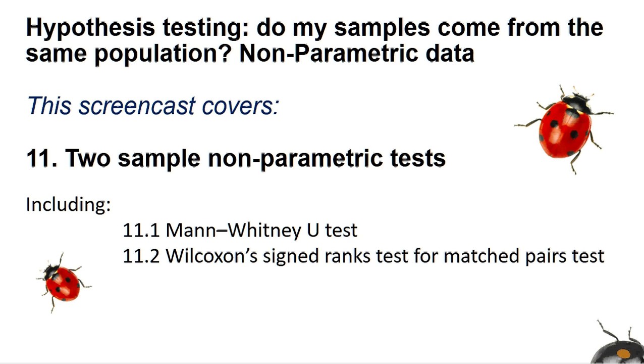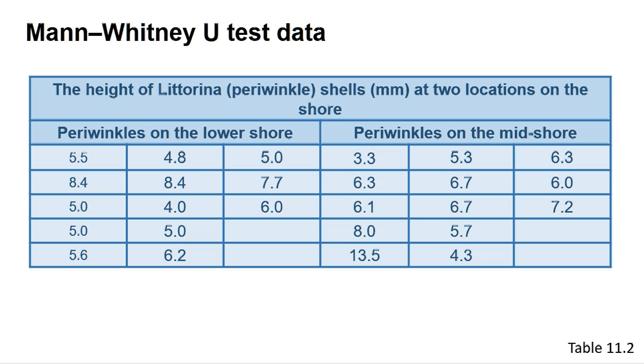These are non-parametric tests that evaluate the hypothesis that two samples come from the same statistical population. The Mann-Whitney U test is performed on samples where the data is independent. In this case, we are looking at the height of two samples of periwinkle distinguished by their position on the shore. No periwinkle is measured more than once. The data can be found in table 11.1.